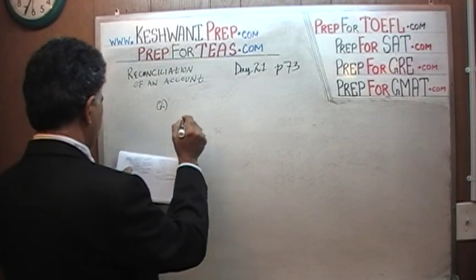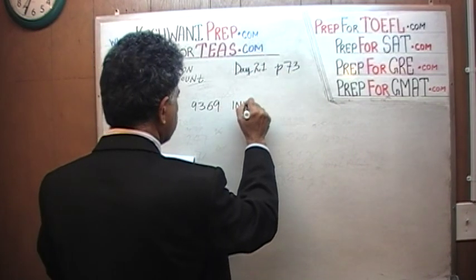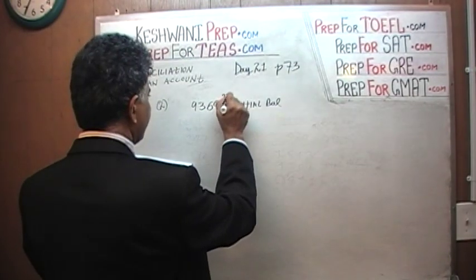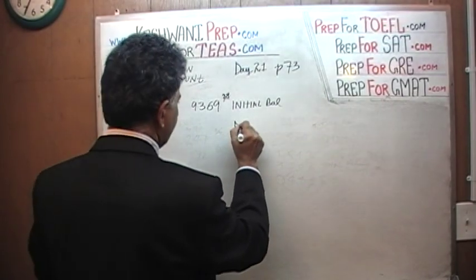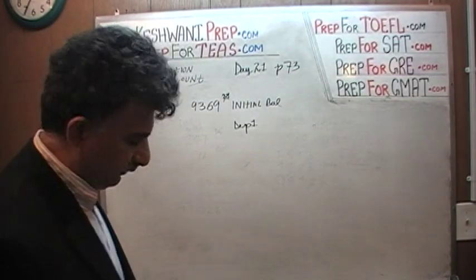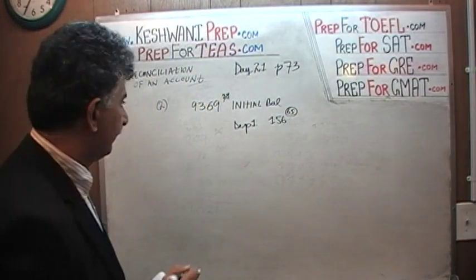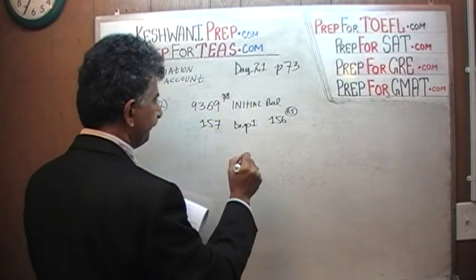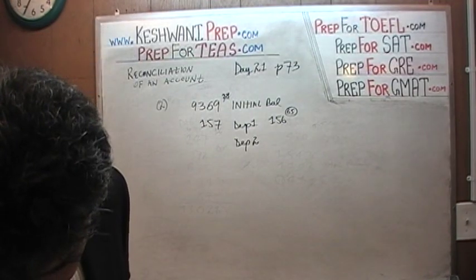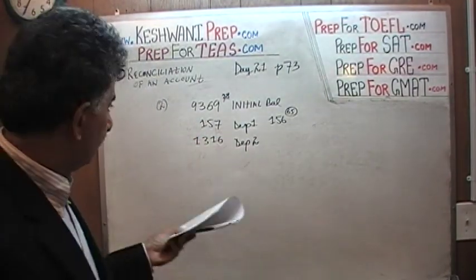Problem number 2. We have an initial balance of $93.69 — we can ignore the 23 cents. Then we made two deposits. Deposit number 1 was $156.65 — since it is more than 50 cents, I'm going to round it up to $157. The second deposit was $1,316 exactly. That is all we have in deposits — those are our total credits.